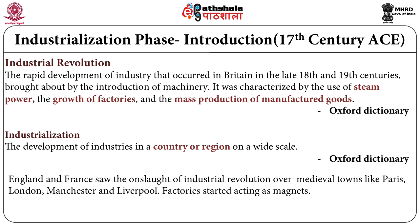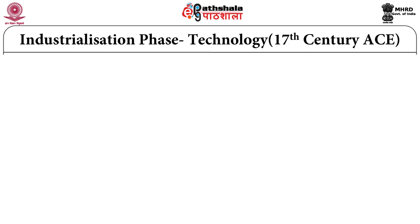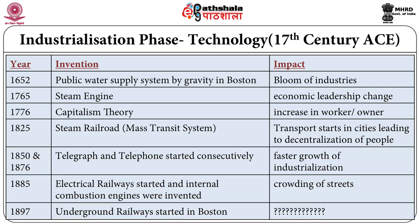Industrialization was characterized by the use of steam power, the growth of factories and mass production of manufactured goods. England and France saw the onslaught of industrial revolution over medieval towns like Paris, London, Manchester and Liverpool. Factories became focal points, acting like magnets, with residential areas surrounding them as employment opportunities. There were both positive and negative impacts of these inventions and developments.